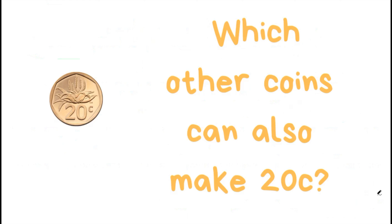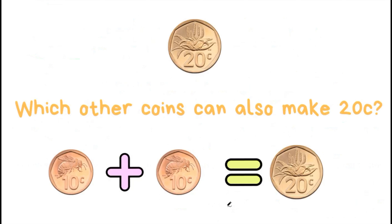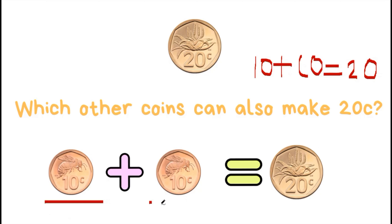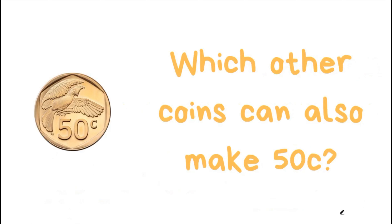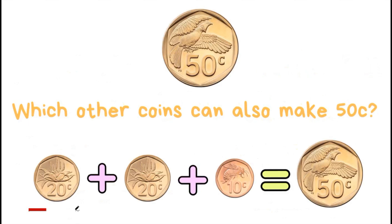Let's think about addition. Which other coins can also make 20 cents? This is a 20 cent coin — which other coins can also make 20 cents? We say 'also' because 50 cents is a single coin on its own. Now, what other coins can be used to make 50 cents? Let's look at one example: 20 cents plus 20 cents plus 10 cents will give us 50 cents.